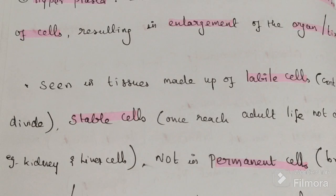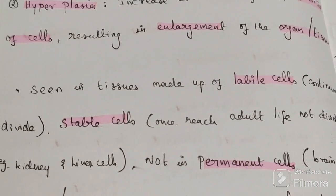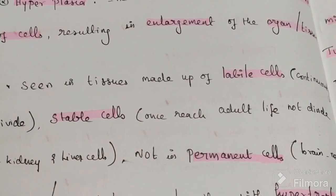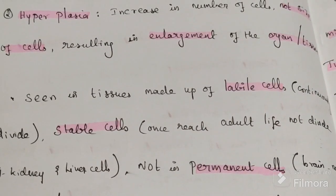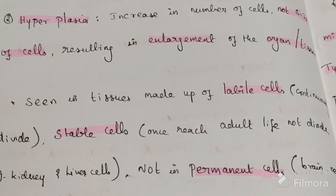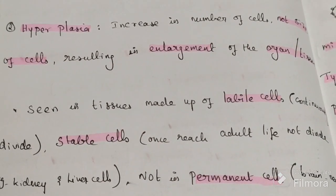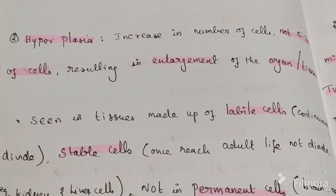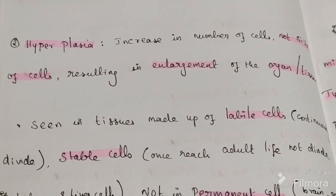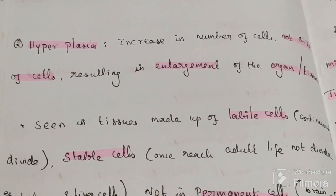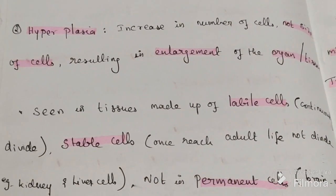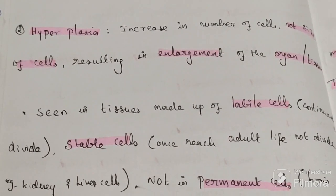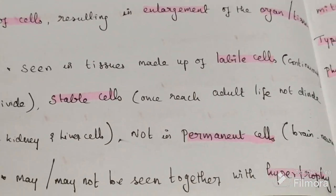The second type is stable cells. Once we reach adult life, they do not divide. Examples include cells of the liver and kidney — once they reach adult life, they stop dividing. But if any injury takes place in the liver or kidney, they have the capability to undergo cell division. These are called stable cells: not dividing in normal adult life, but capable of division after injury.